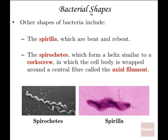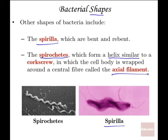We can also have the spirilla shape, which are bent and twisted, surrounded by cytoplasmic material. Then there are spirochetes, which are corkscrew-looking bacteria that form a helix around an axial filament. We'll see examples of them in other discussions.